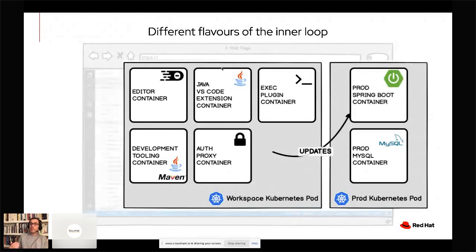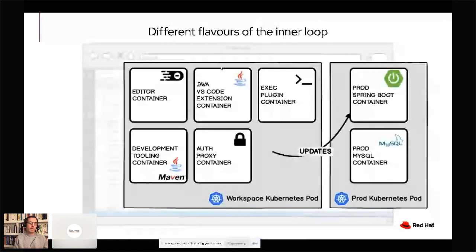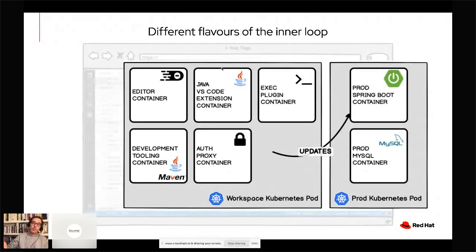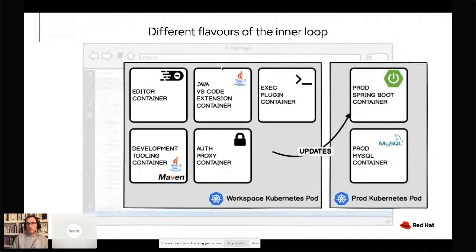The problem with that approach is that copying the artifact or rebuilding the image are operations that take time, which may add to the inner loop. When you're developing, you probably want to see results immediately — you don't want to wait for an image to be rebuilt and a rolling update of your application. So when we build and run in the same pod where we have the development tooling, we don't have production/development parity but it's faster. With the other approach, you're using exactly the same definition of your production pod, but it can take more time to update the application in the inner loop.